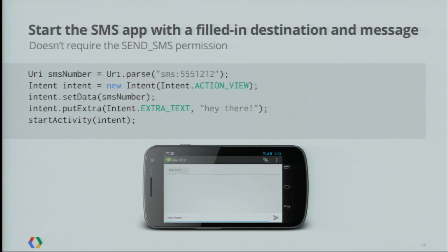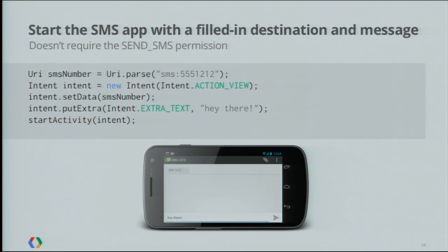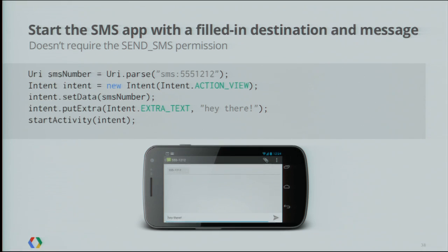Another example is letting the user send an SMS message. Instead of requesting the SEND_SMS permission and going through all the effort of talking to the telephony manager, you can create an intent and start an activity that launches the system SMS app with the number and message that you choose. The user gets to see the destination phone number and message, and they'll have the option of either sending it or declining. Obviously this won't work for every app that has SMS features, but if SMS is just a minor part of your app — for example, letting the user share a link through SMS — then you don't have to worry about requesting the send SMS permission.